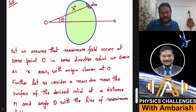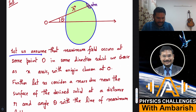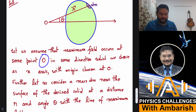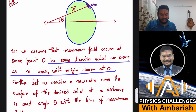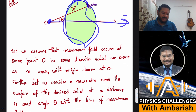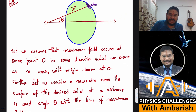Let's assume that maximum field occurs at some point O — the problem calls it P, but I've named it O for convenience. We choose the direction of the maximum field as the x-axis, with origin at O. Because of this geometry, some field exists, and whatever direction that field points is what I've chosen as the x-axis.